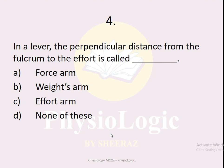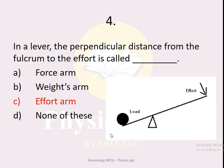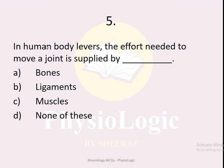MCQ number four: in a lever, the perpendicular distance from the fulcrum to the effort is called — force arm, weights arm, effort arm, or none of these? The correct option is effort arm. In a lever there are three key points: the fulcrum, the point where effort is applied, and the point where load is applied. The distance from fulcrum to load is the weights arm or load arm, and the distance from fulcrum to effort is the effort arm.